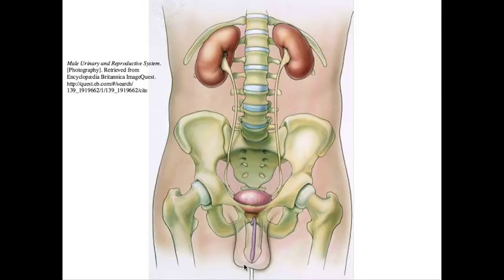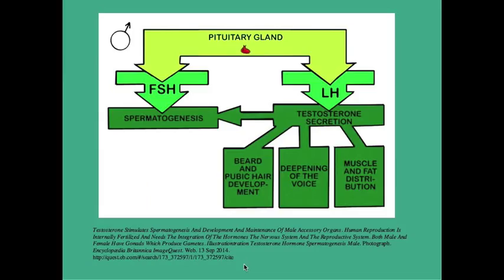Testosterone triggers the development of secondary sexual characteristics like beard growth, pubic hair, deepening of the voice, and broadening of the shoulders.